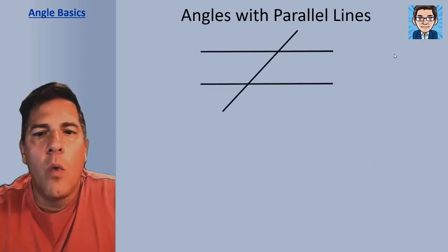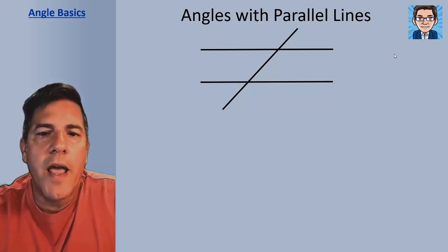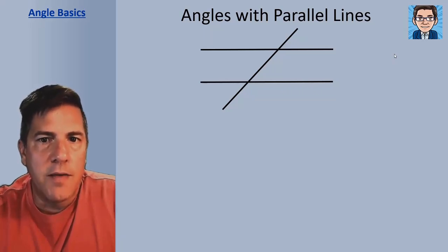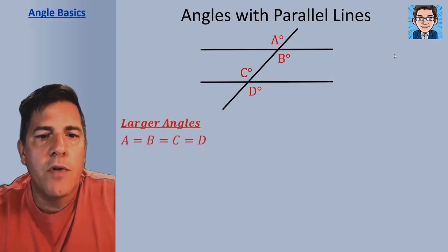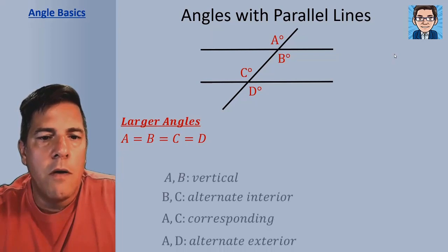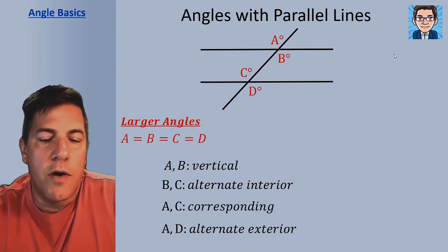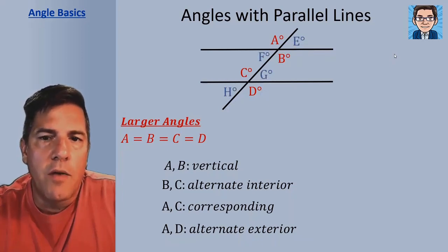When one line crosses two parallel lines, we're going to get eight different angles. Unless it crosses perpendicularly, it's going to form four angles greater than 90 degrees and four angles smaller than 90 degrees. The four larger angles — labeled A, B, C, and D — are all going to be equal to each other. A and B are vertical angles, B and C are alternate interiors, A and C are corresponding angles, and A and D are alternate exterior angles.